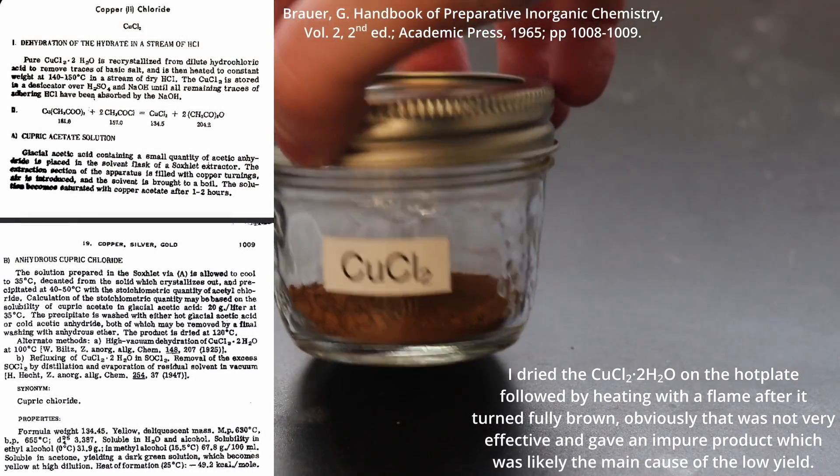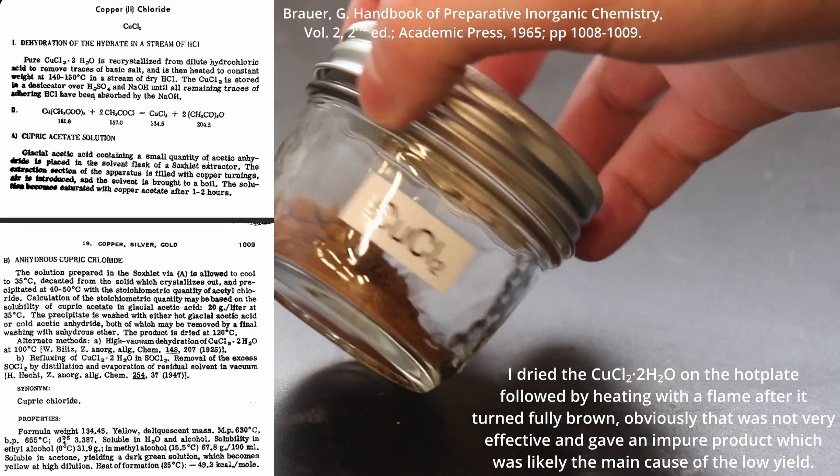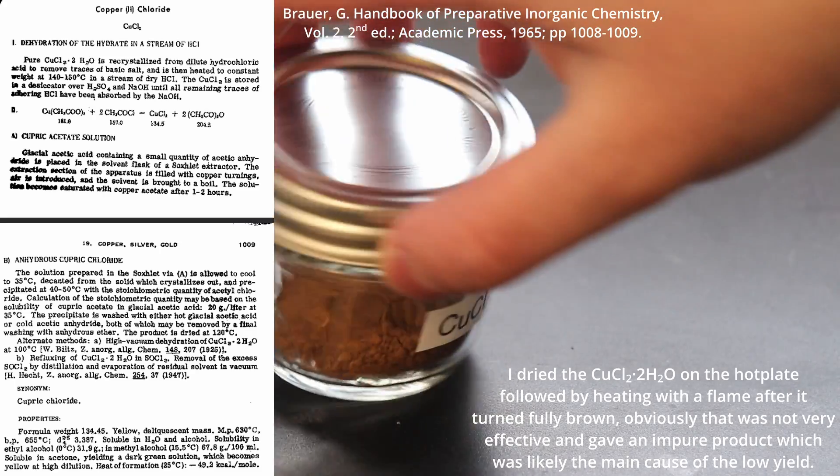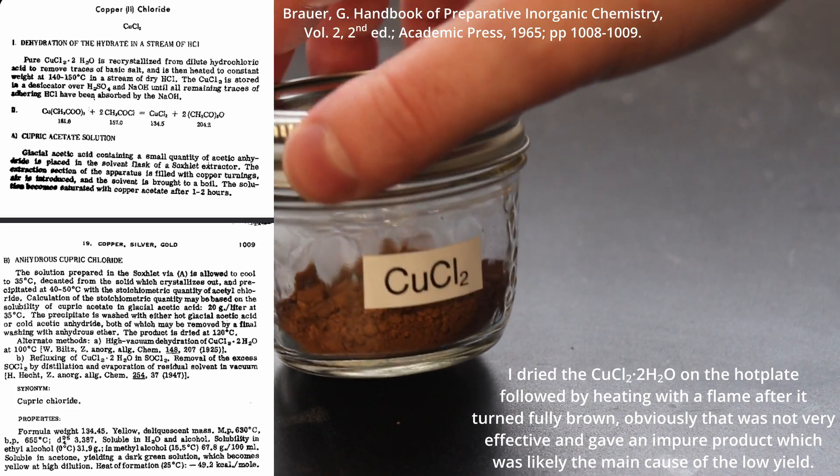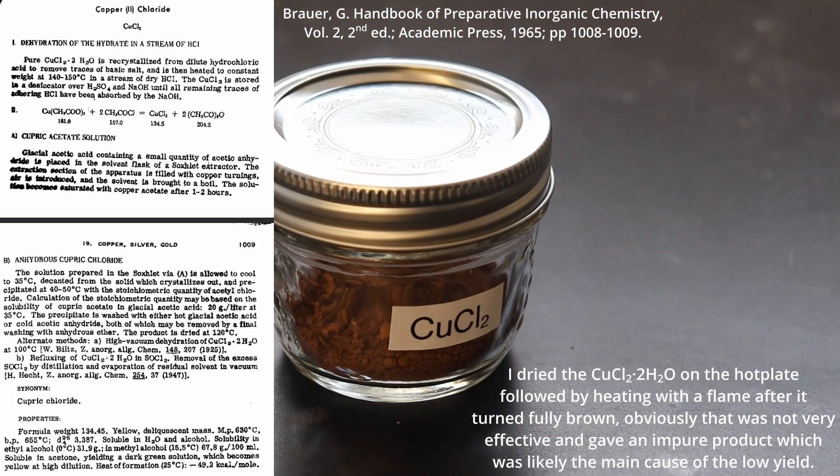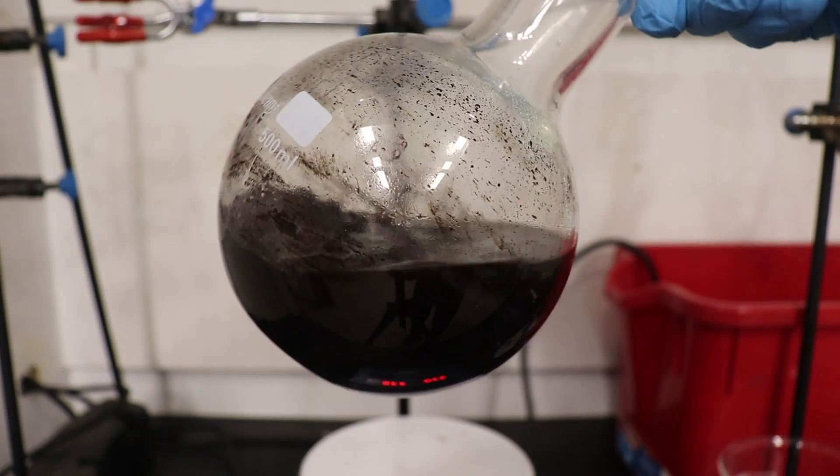The main determiner of yield is likely the purity of the anhydrous copper chloride. Any residual moisture will destroy the phenylmagnesium bromide leading to a significant reduction in yield. Also the handling time in air needs to be minimized as it is very hygroscopic and will fairly quickly turn back into the dihydrate. Also care needs to be taken when drying the copper chloride dihydrate, as excessive heating will lead to the formation of copper oxychlorides and hydroxychlorides which can also destroy the phenylmagnesium bromide as well as throw off your stoichiometry.